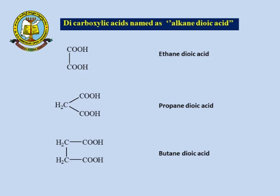For dicarboxylic acids, we use IUPAC nomenclature calling them alkanedioic acids. With two carbons it is ethanedioic acid, with three carbons it is propanedioic acid. The example with two CH₂ groups and two carboxylic acid groups has four total carbons, giving butanedioic acid. In this way we can give the IUPAC nomenclature for both monocarboxylic and dicarboxylic acids.